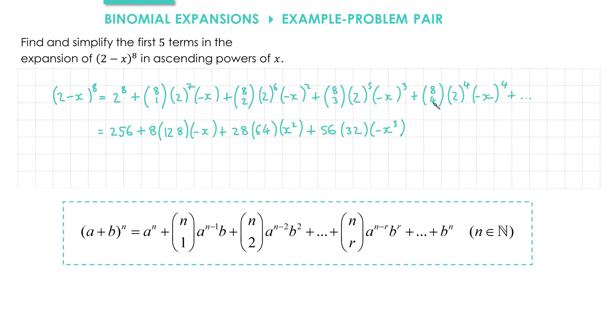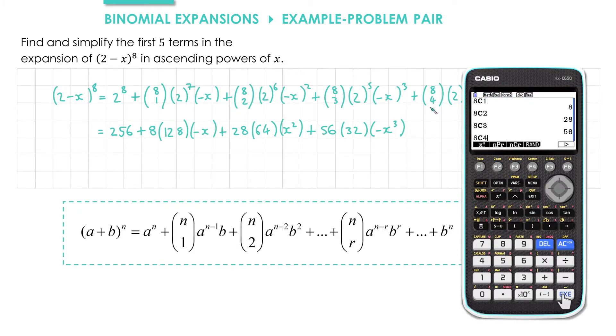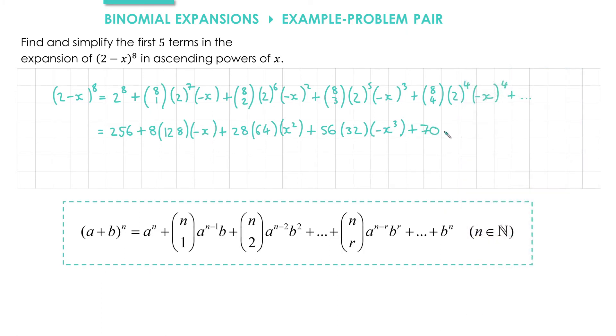And then we've got 8 choose 4. That gives us 70. 2 to the 4 is 16, and negative x all to the power of 4 gives us positive x to the 4.